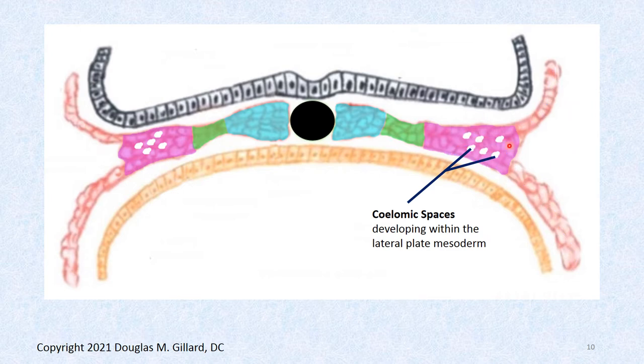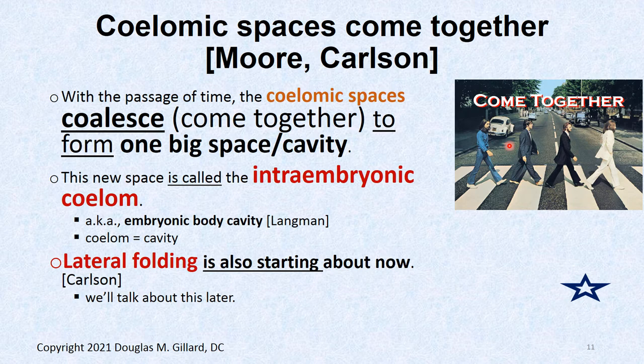The coelomic little cavities coalesce together into a new big cavity called the intraembryonic coelom. Langman calls it the embryonic body cavity, so watch out for boards — chiropractors may see it called the embryonic body cavity, but most authors call it the intraembryonic coelom. As a side note, folding starts at about this same time, because right now we have a flat disc and we need to fold it into a tube — we're not flat, we're round. So when the intraembryonic coelom forms, folding starts at about the same time.